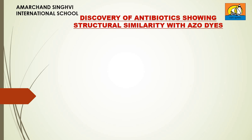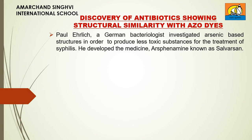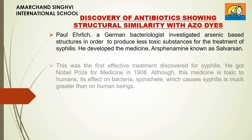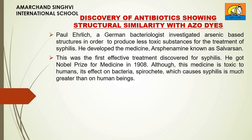Discovery of antibiotics showing structural similarity with azodides: Paul Ehrlich, a German bacteriologist, investigated arsenic-based structures in order to produce less toxic substances for the treatment of syphilis. He developed the medicine Arsphenamine, known as Salvarsan. This was the first effective treatment discovered for syphilis. He got the Nobel Prize for medicine in 1908.